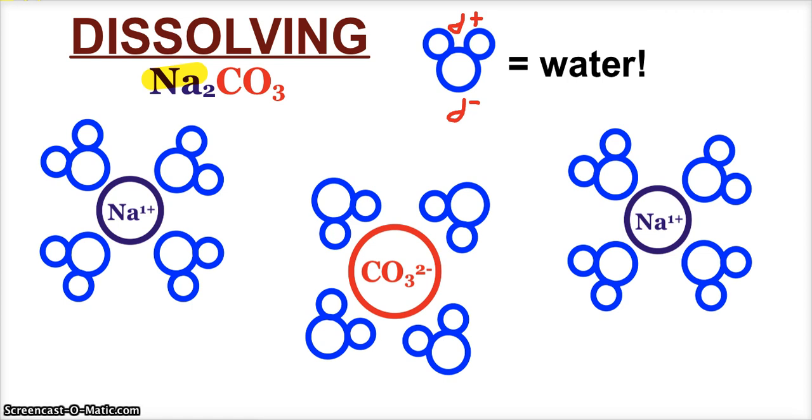Now, we'll also notice the sodium ions are smaller than the carbonate ions. Okay, and that makes sense. We've got a single monatomic sodium plus one ion versus carbonate, a carbon and three oxygens with extra electrons around it. And that's going to play a part when we talk more about dissolving.